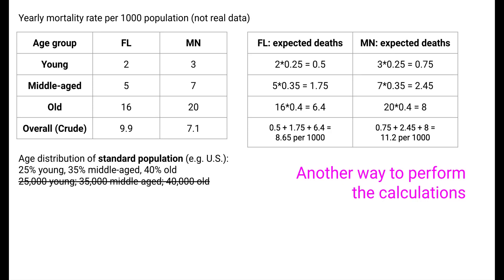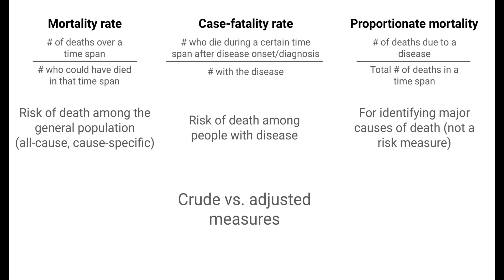Stepping back from the math, standardization gives us a way to fairly make comparisons — often between different populations, but also within a single population over time. In summary, we've learned about three ways of measuring mortality: general mortality rates, case fatality, and proportionate mortality. These capture risk of death in different groups of people and help identify major causes of death in a population. An important theme is that of adjustment — the idea that there are many factors that affect disease-related outcomes, and that these factors need to be considered carefully when making comparisons.